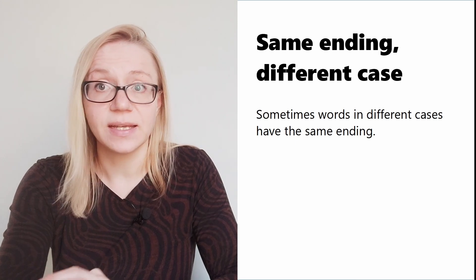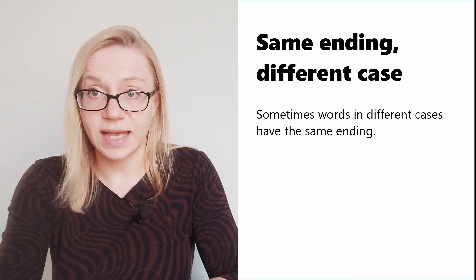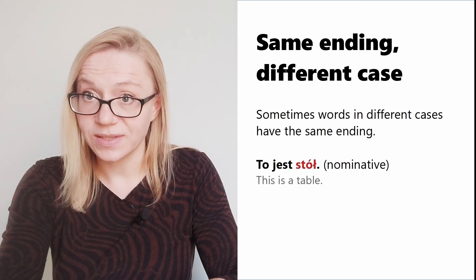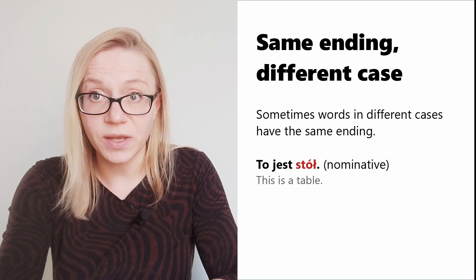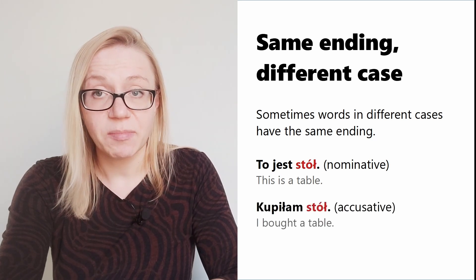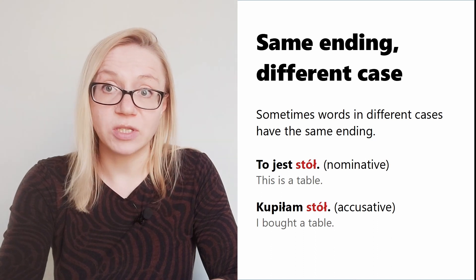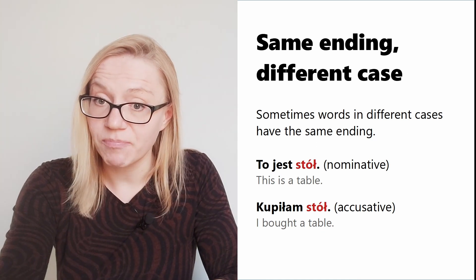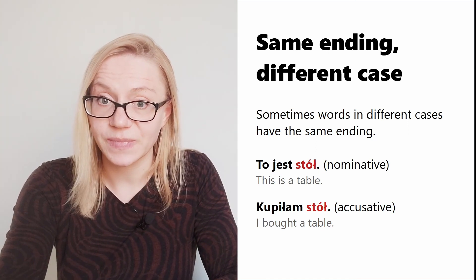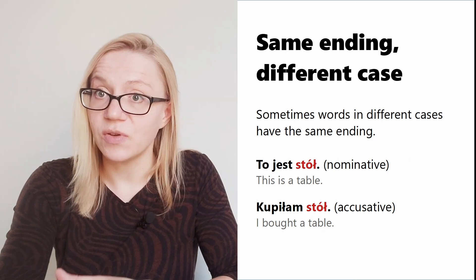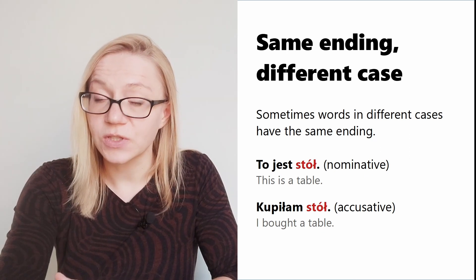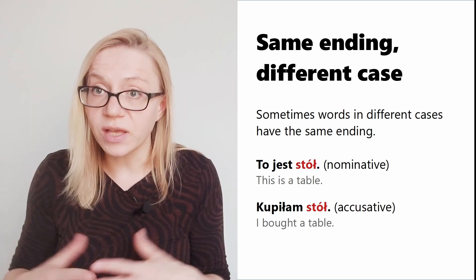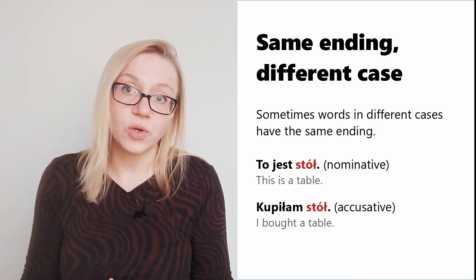It often happens that a word looks exactly the same in different cases. For example, 'to jest stół' — 'stół' is in the nominative case. But in 'kupiłam stół' — 'I bought a table' — 'stół' looks exactly the same but it's the accusative case. So it's not enough to see a word alone; you need to read the whole sentence and understand the case from context.